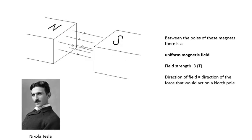So now we've got two poles here, a north pole and a south pole, and between these poles there is a uniform magnetic field — uniform as in the strength of the field is the same everywhere. Magnetic field strength has the symbol capital B, and it is measured in Tesla. That's named after Nikola Tesla, who was a very, very clever bloke.